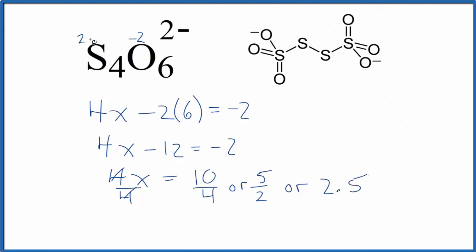So 2.5 would be the average oxidation number for each sulfur here in S4O6 two minus.